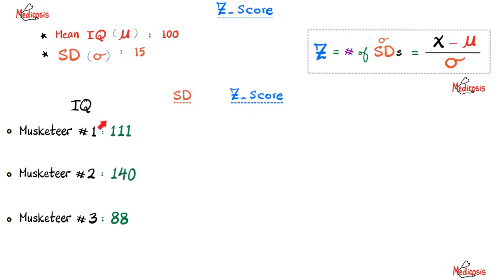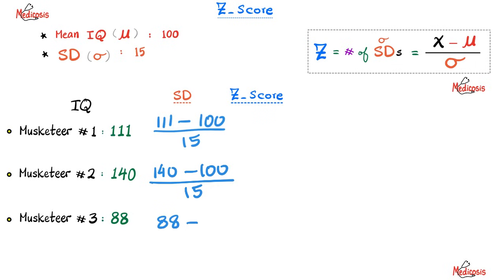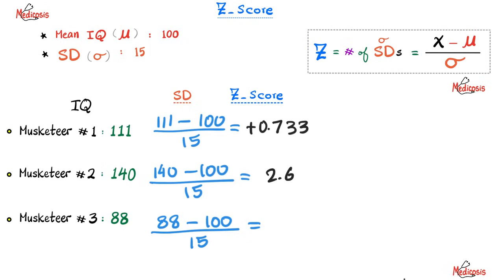Let's practice more with the three musketeers. The IQ of the first is 111, the second is 140, and the third is 88. For the first: (111 minus 100) divided by 15 = 11/15 ≈ 0.733. For the second: (140 minus 100) divided by 15 = 40/15 ≈ 2.667. For the third: (88 minus 100) divided by 15 = negative 12/15 = negative 0.8. The musketeer with the highest z-score is the smartest.